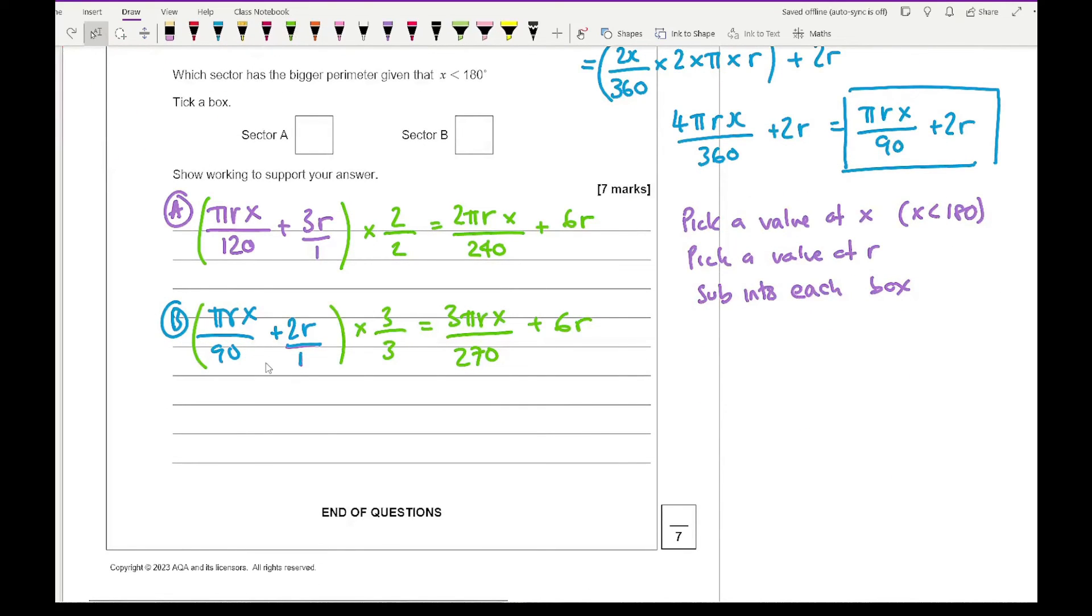As you can see, we're both adding 6r in both, so what we can do is basically focus on these two things here. This is looking an absolute mess, but if I simplify that, it's going to be pi r x over 120, and this is going to be pi r x over 90.